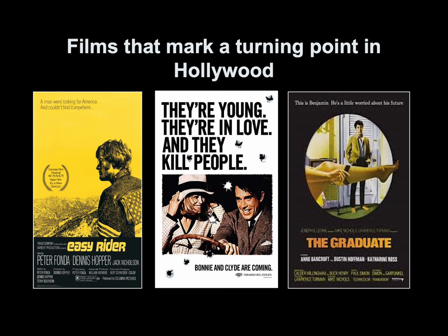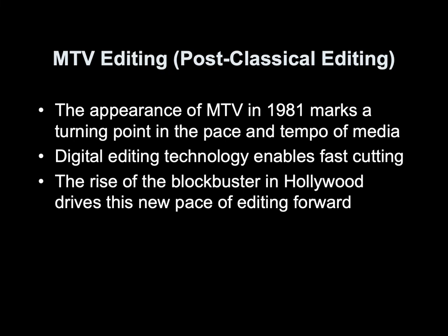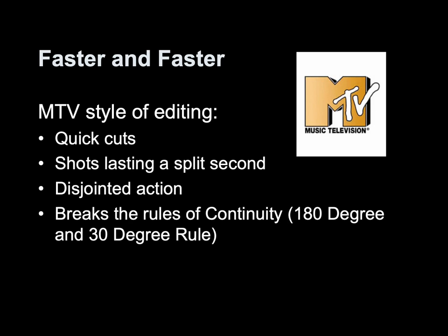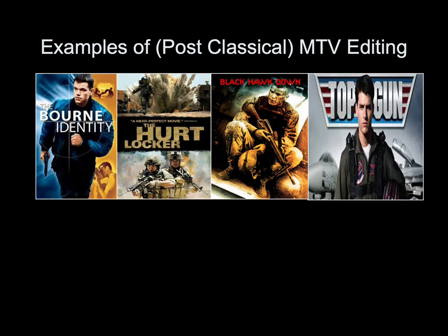Post-classical cutting, also known as MTV editing. The appearance of MTV in 1981 marks a turning point in the pace and tempo of media. Digital editing technology enables fast cutting, and the rise of the blockbuster in Hollywood drives this new pace forward — faster and faster. MTV's style of editing consists of quick cuts, shots lasting a split second, and disjointed action. MTV style editing breaks the rules of continuity — the 180-degree and the 30-degree rule. Examples of post-classical cutting include The Bourne Identity, The Hurt Locker, Black Hawk Down, and Top Gun.